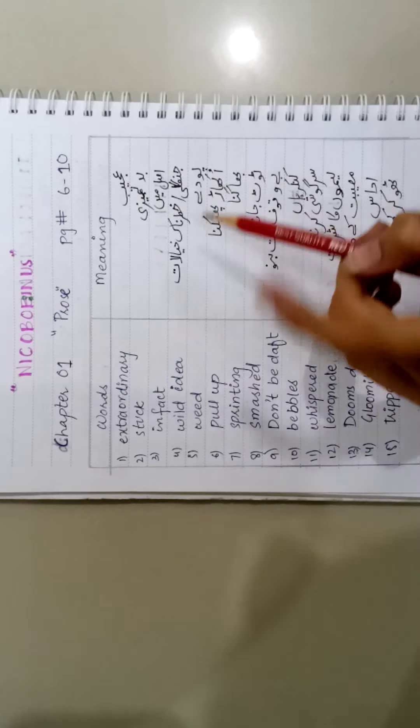Sprinting: bhaagna. Smashed: toot jana. Don't be daft: bewaqoof mat banu. Babbles: kankriyan. Whispered: sargoshi karna. Laminate: limu ka sharbat. Doom days: musibat ke wakt. Gloomily: udaas. Tripped: thokar khana.